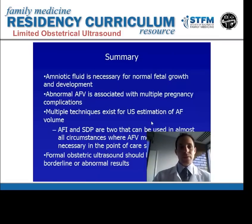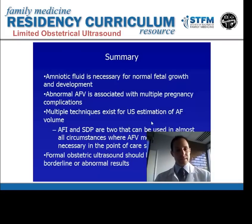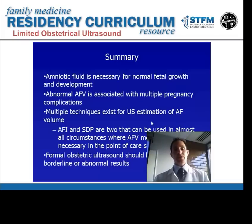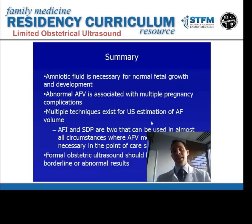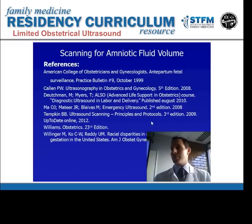In summary: amniotic fluid is a necessary component for normal fetal growth and development. Abnormal amniotic fluid volume is associated with multiple pregnancy complications and a risk for adverse perinatal outcomes. The two most useful techniques to learn initially are the amniotic fluid index — measuring quadrants for a term gestation — and the single deepest pocket, which can be used in preterm gestations. Formal obstetric ultrasound should always be obtained if you have borderline or abnormal results.